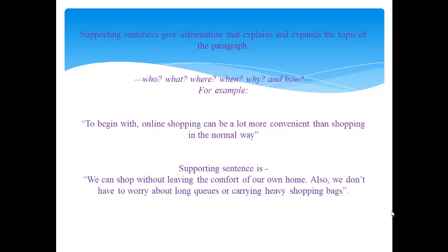As for supporting sentences, they give information that explains and expands the topic of the paragraph. One of the biggest problems for students in writing is that they fail to support their ideas adequately. They need to use specific details to be thorough and convincing. There are several kinds of specific supporting details: examples, statistics, and quotations. Supporting sentences answer the questions who, what, where, when, why, and how, and give details.